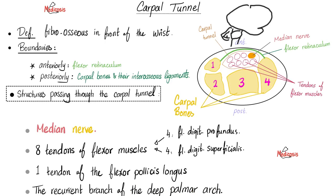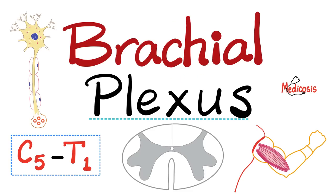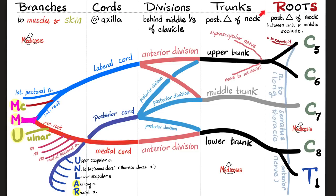The median nerve originates from the brachial plexus, which consists of the anterior primary rami of C5, C6, C7, C8, and T1. Remember how we memorized the brachial plexus — everything was five. We have five compartments: roots, trunks, divisions, cords, and branches. You need to know five facts about each one. The terminal branches are the musculocutaneous nerve, the median nerve, the ulnar nerve, the axillary nerve, and the radial nerve.